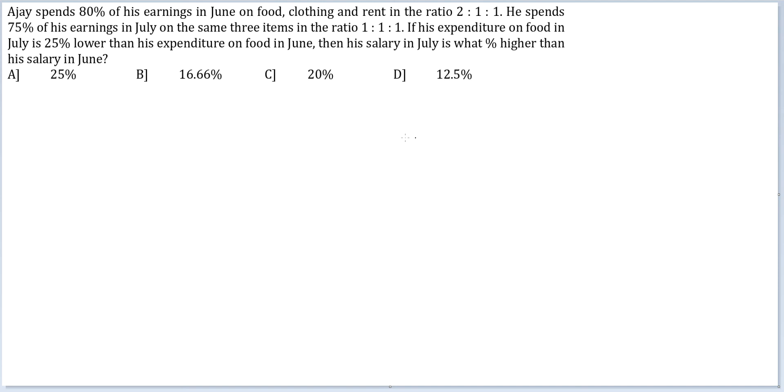Okay, so you start off by assuming values. In June, if his salary was 100, so his expenditure, if his earnings is 100, his expenditure will be 80, which gets divided in food, clothing and rent in the ratio 2 is to 1 is to 1 or 40, 20 and 20. This is the storyline for June.